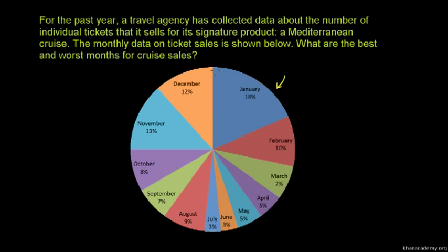If you want to use the cruise, you can use it as well, depending on what you can do to represent your PI if you are not using 18%. You can see 18% of your PI.